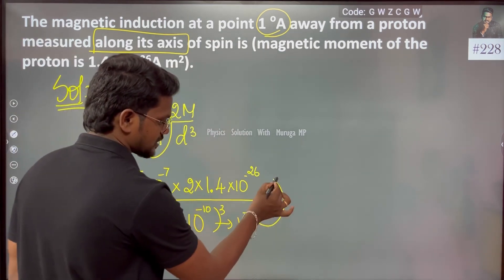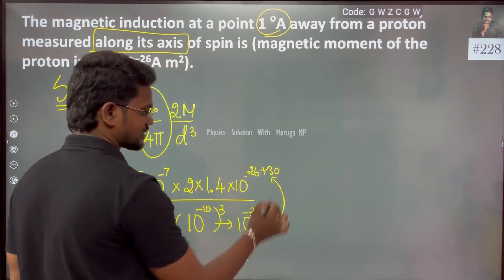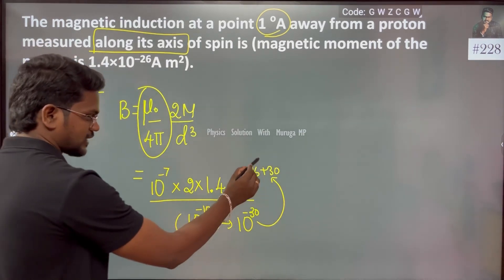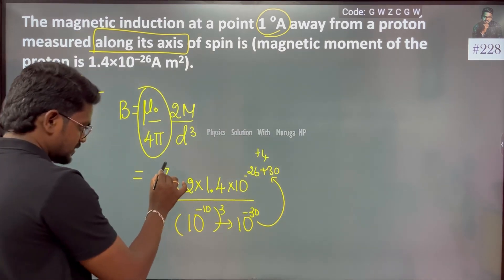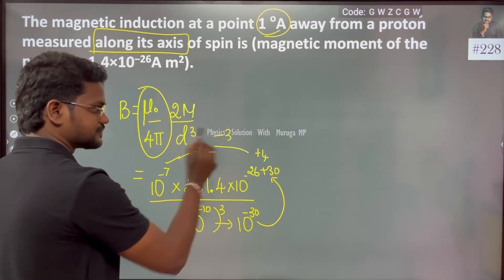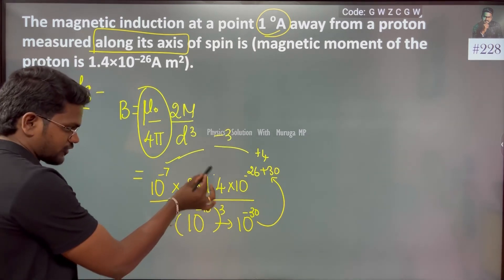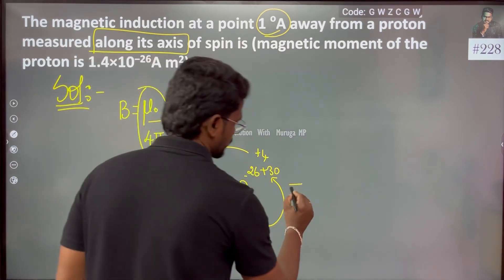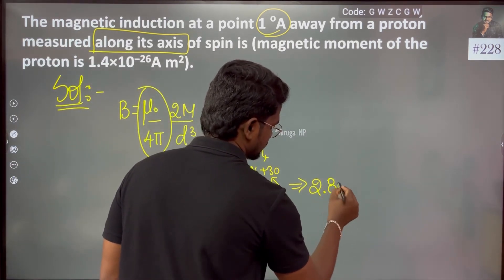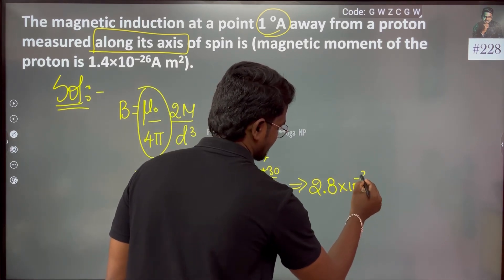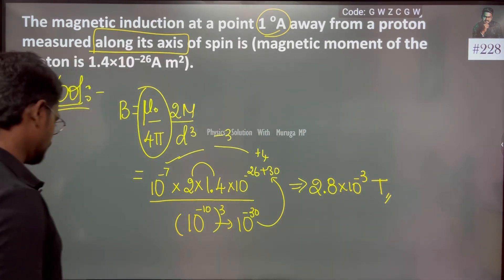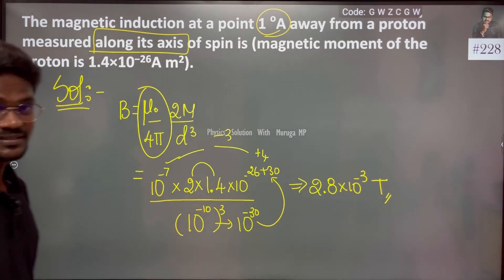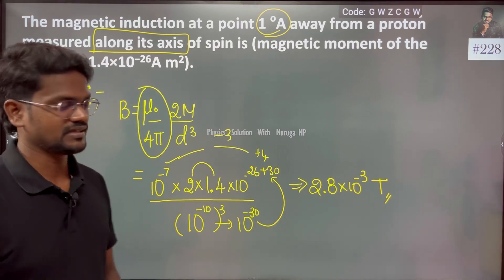Working out the powers of 10: the denominator gives 10 to the minus 30, so on top we get plus 30. Then plus 30 minus 26 gives plus 4, and with the 10 to the minus 7 factor, that gives 10 to the power minus 3. The numerical part: 1.4 × 2 = 2.8. So the final answer is 2.8 × 10 to the power minus 3 Tesla.